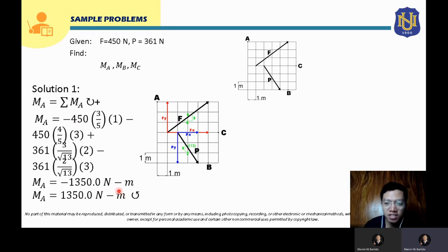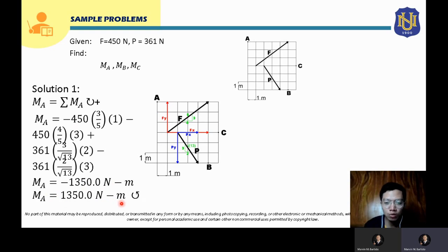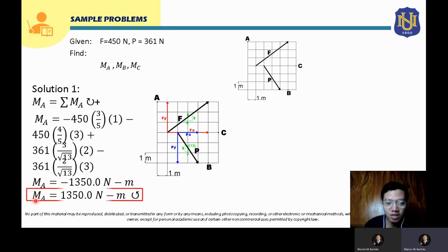The unit of moment is newton·meter, since the formula is force × distance. If you put the wrong unit or omit it, your answer will be wrong. So the moment at A is 1350 N·m counterclockwise.